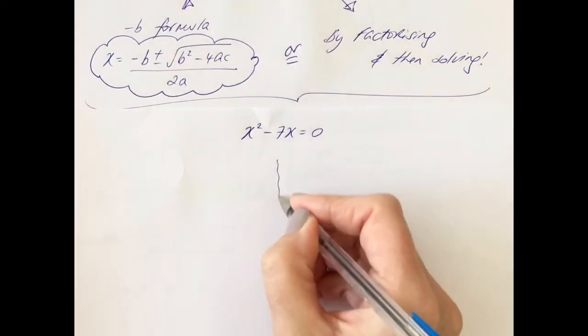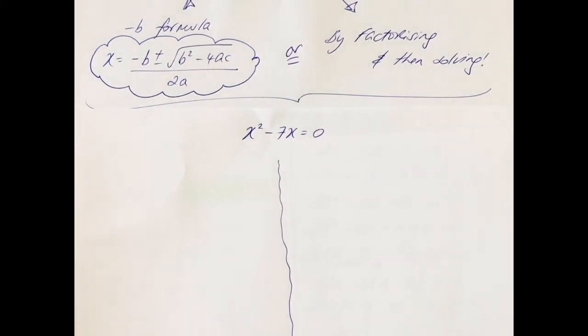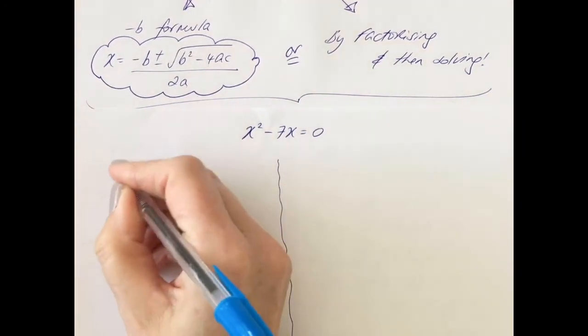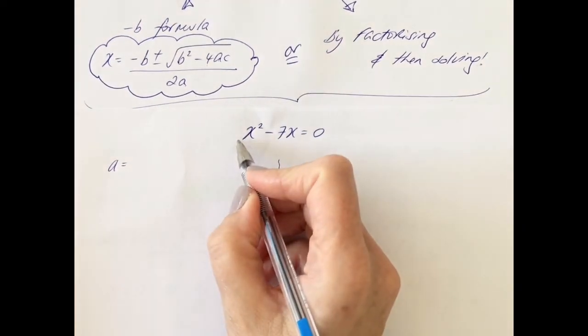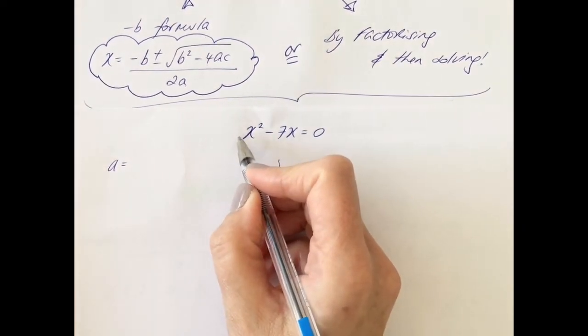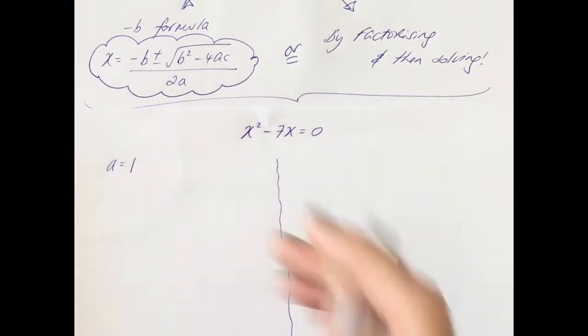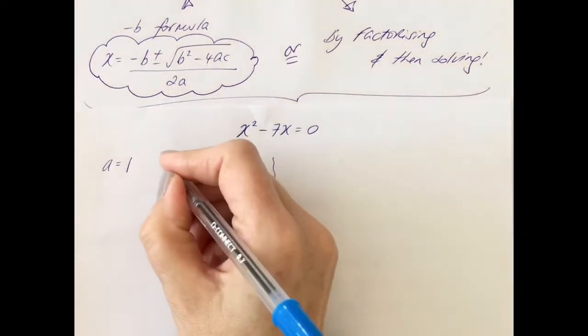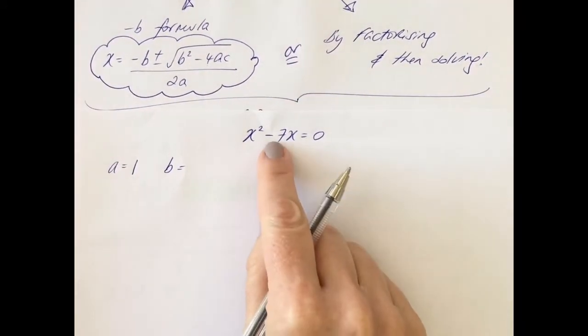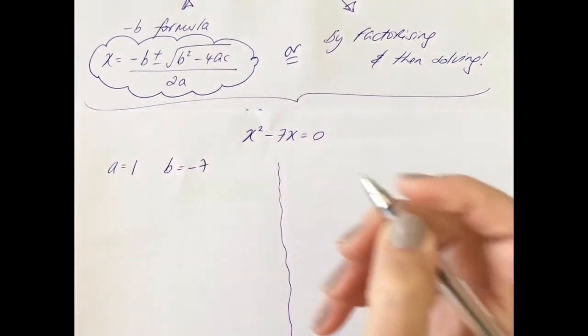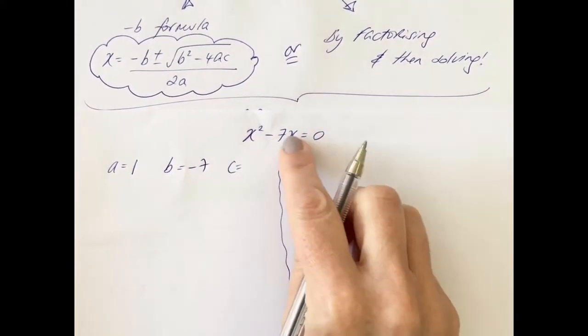So with the minus b formula, list out your a, b, and c. Your a is the coefficient of x squared. Now there's no number here which implies it must be one, so a is one. And b is the coefficient of x, which in this case is minus seven.